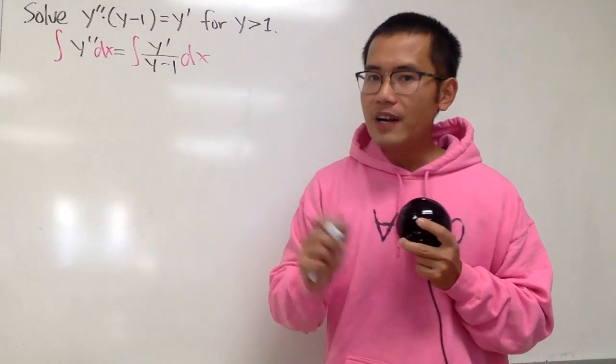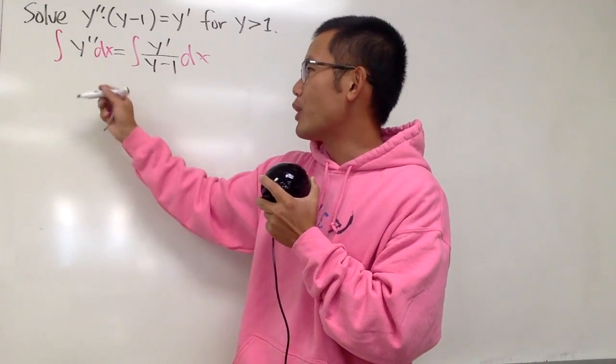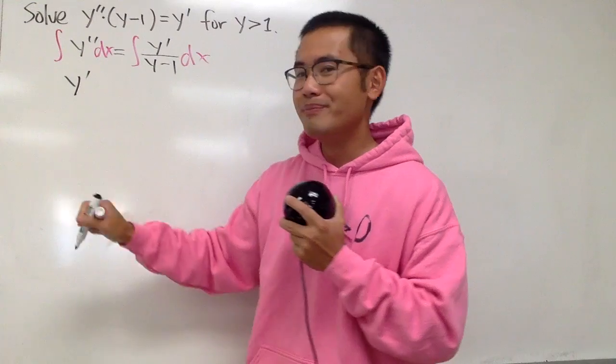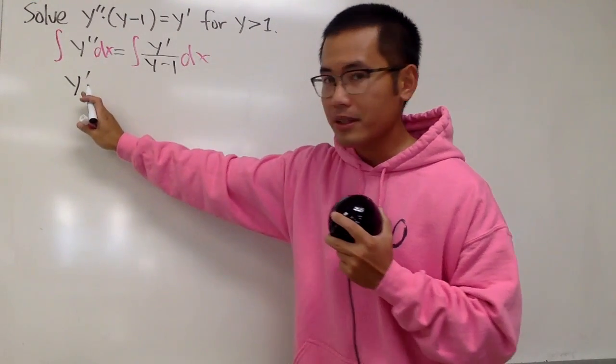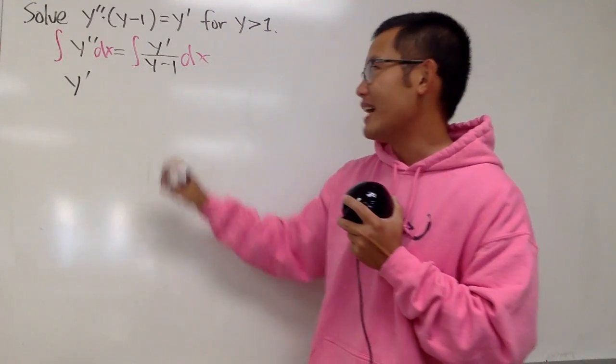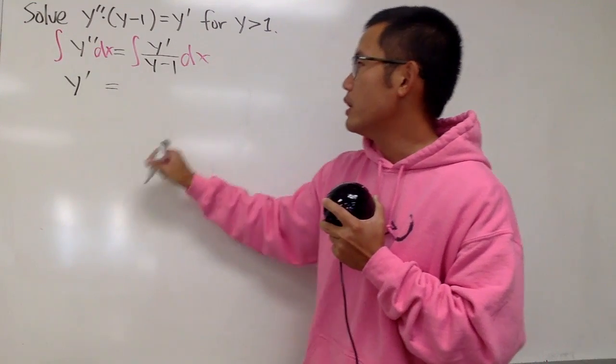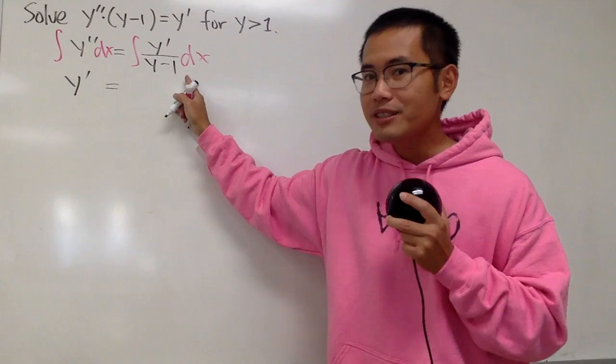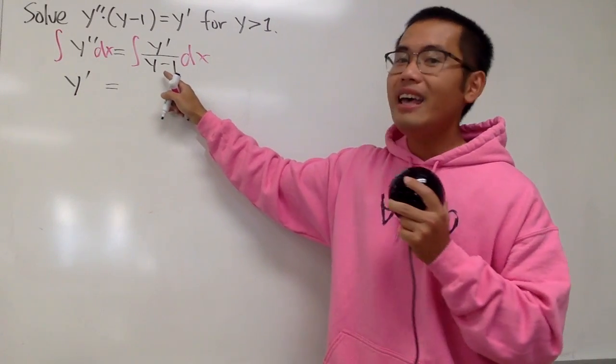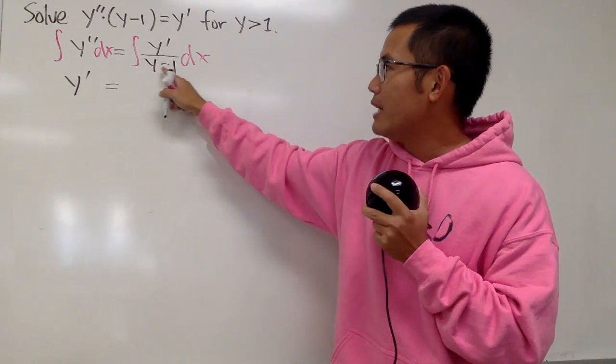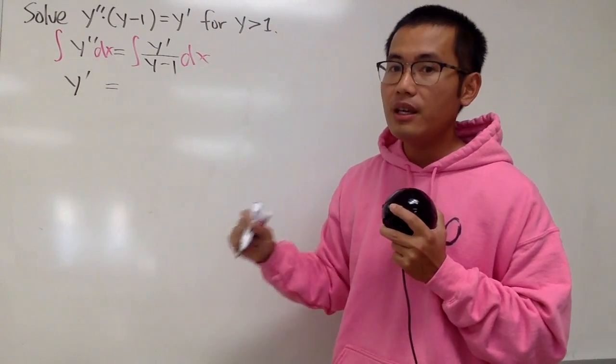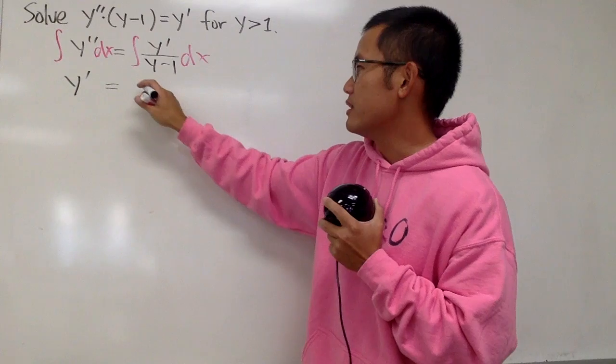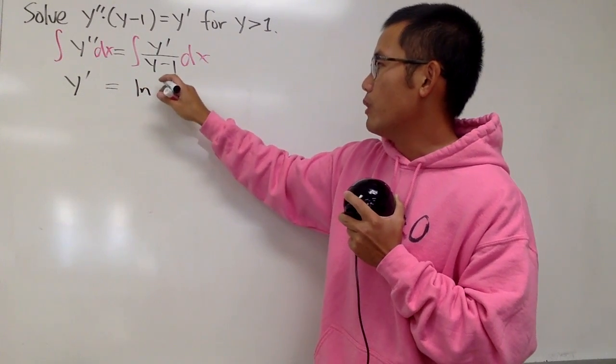The left-hand side is very easy, because when we integrate y'' we just get y'. Very nice. Don't worry about the constant, just put it down on the right-hand side. So here this is equal to, integrating this, notice that we have y-1 on the bottom, and when we differentiate y-1, we just get y' and that's on the top already. All in all, the integral right here is just natural log